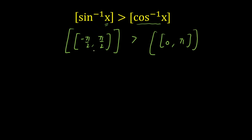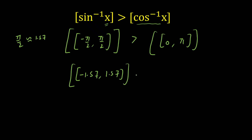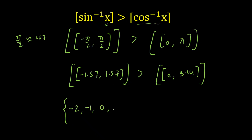Let us estimate these values. π/2 is approximately 1.57, so sin inverse of x ranges from −1.57 to +1.57. Taking the GIF of this range, the integers present are −2, −1, 0, and 1. Note that 2 is not possible, so the possible GIF values for sin inverse of x are {−2, −1, 0, 1}.